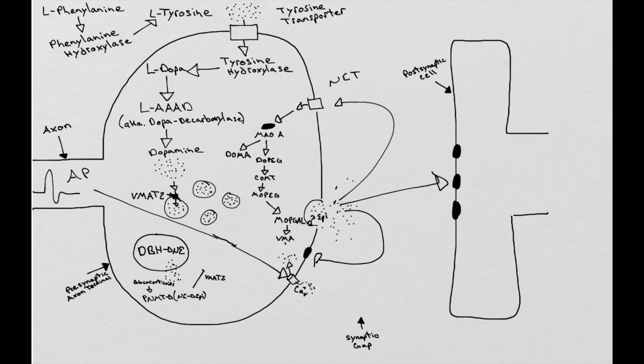But the bottom line, you need to know that these are different. They're broken down systematically by different stages, ultimately to VMA, which is vanillylmandelic acid, which is excreted in the urine.